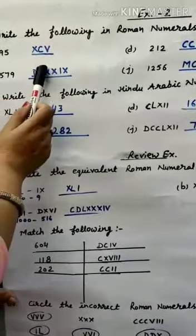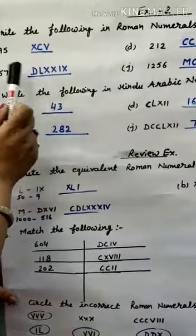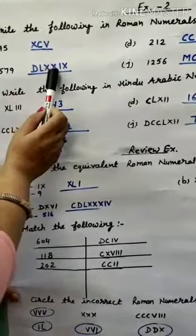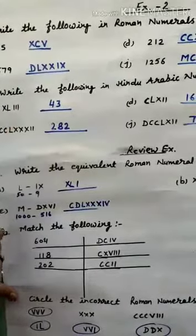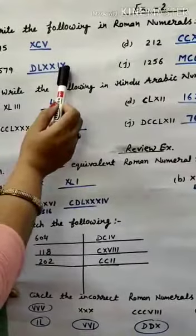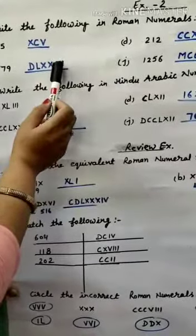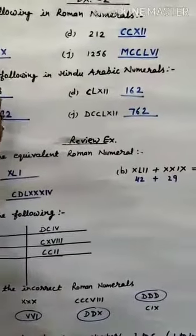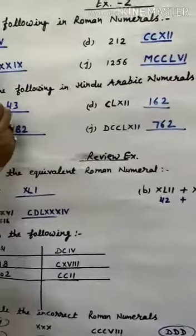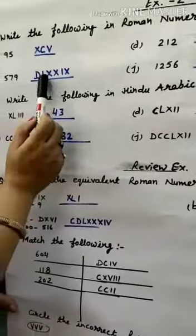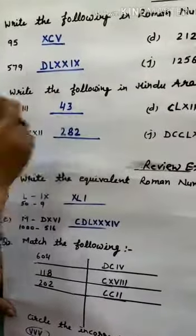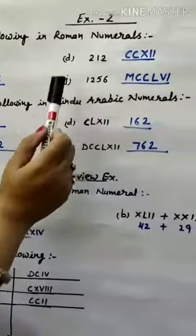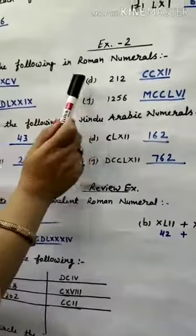For 70, we use L (50) and then XX (10+10) to make 70. For 9, we subtract I from X. So 579 is written as DLXXIX — D for 500, LXX for 70, and IX for 9.